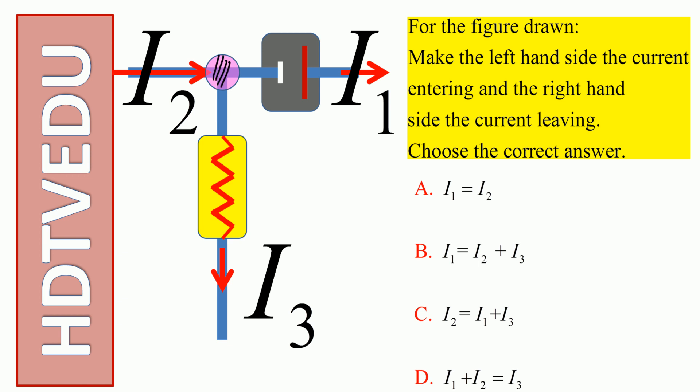Here is our point, and for that point I2 is entering. So on the left we need I2, and what is current leaving? I1 and I3. So current entering I2, current leaving is I1 plus I3. So what is our answer? Our answer is current entering I2, current leaving is I1 plus I3. So the answer is C.